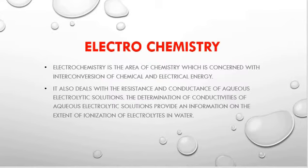Electrochemistry is the area of chemistry which is concerned with the inter-conversion of chemical energy and electrical energy. For example, you must have heard about dry cell. A dry cell is a device which converts chemical energy into electrical energy. You must also be familiar with electrolysis — the breaking down of an ionic compound by the passage of electricity. The breaking down of an electrolyte during electrolysis is a chemical reaction that takes place by the passage of electricity.